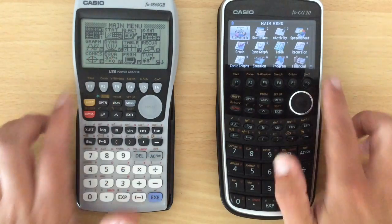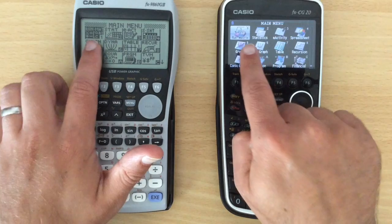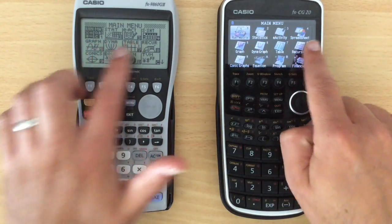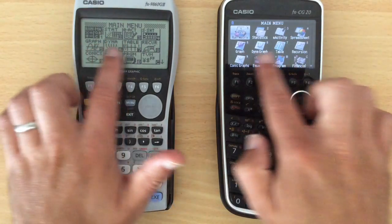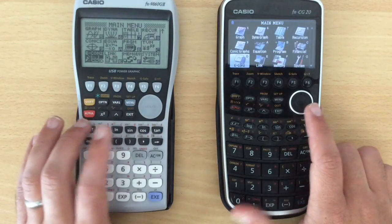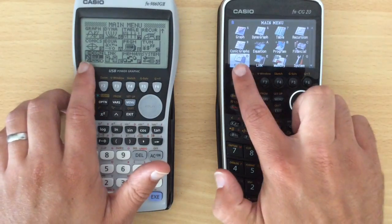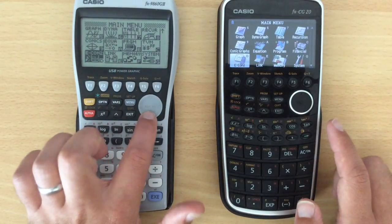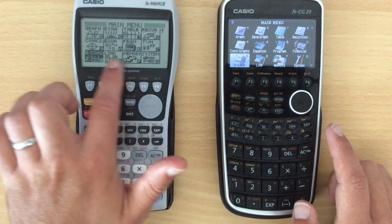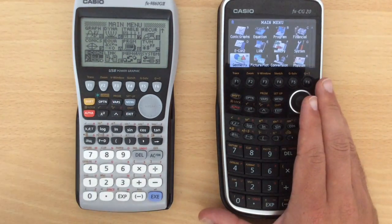In terms of what we've actually got in here, we've got essentially the same things. These menus are exactly the same as they're going on. They call them slightly different things, but the top row is the same, second row is the same, third row is the same. We've got essentially the same stuff here as well. But that is where the menu ends on this one. There is an extra row on the CG20.